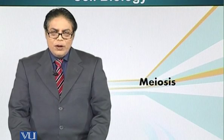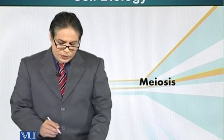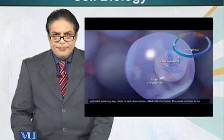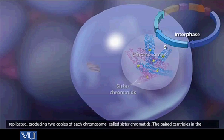Now I would like to show you a video animation of meiosis. We are going to start our animation from the S phase. Remember, in S phase the DNA replicates and the cell proceeds to G2 phase. That's where the cell is going to prepare for meiosis.